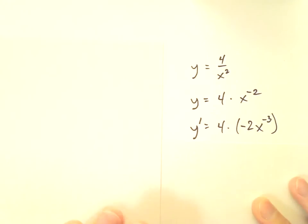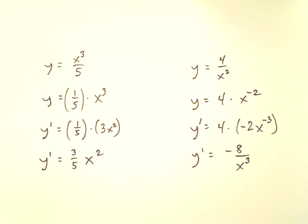You can tidy things up a little bit. 4 times negative 2 gives you a negative 8. You could leave this x to the negative 3 the way it is, or you can put it back into the denominator with a positive 3. Take your pick. Either way works fine.